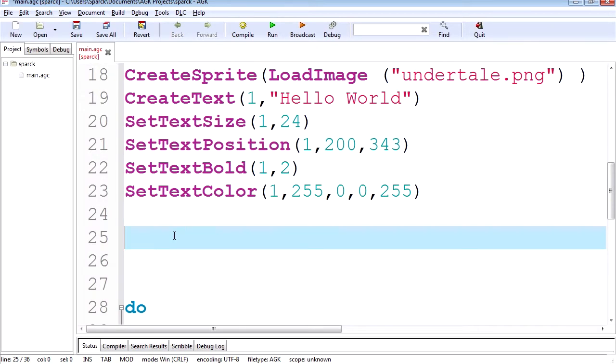Now to make a variable, all you have to do is type something. Like we can call something score. You don't have to call it score. You can call it whatever you want. You can call it elephant if you want to.